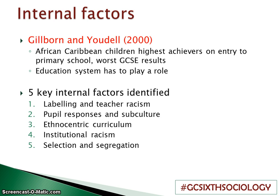Gilborne and Udall believe that there are definitely internal factors in play when it comes to educational differences between ethnicities and achievement. They found that the education system has to have a role to play. An example they gave was some African Caribbean children who were very high achievers when they started primary school, and by the time they came through to their GCSE results, they were the lowest achievers. Gilborne and Udall believe it can't all be down to things outside of class — the influence within school has to be significant.